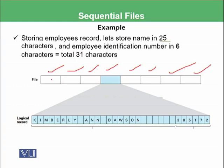This means each of the eight boxes has 31 characters. So after every 31 characters, we will understand that this is the end of the first employee and the second employee has started. After 31 characters, this employee has finished and the next employee has started, and so on.